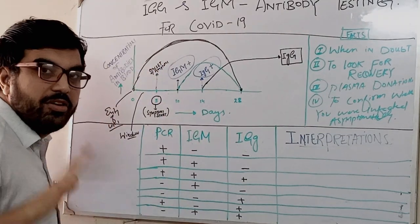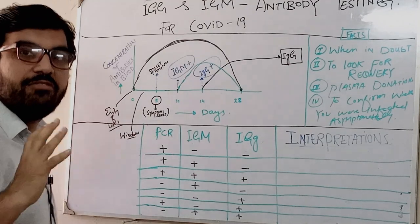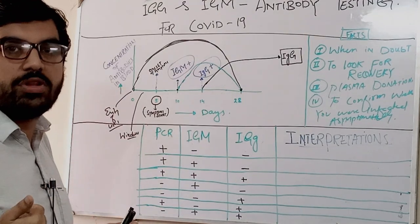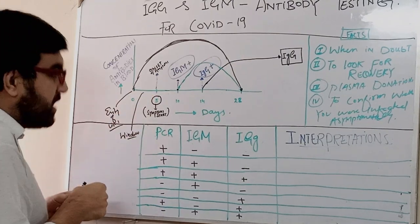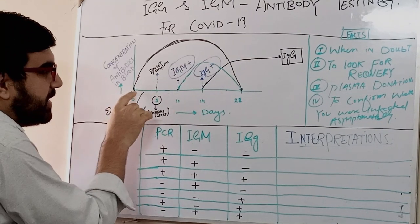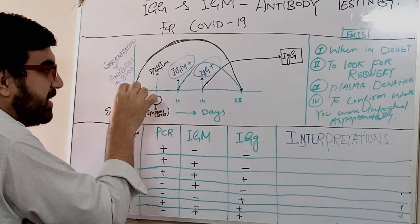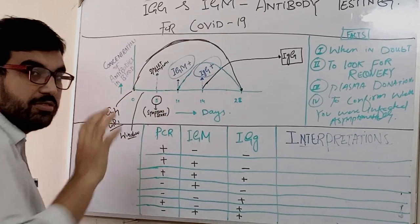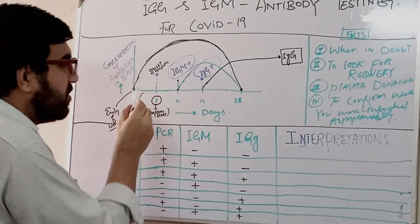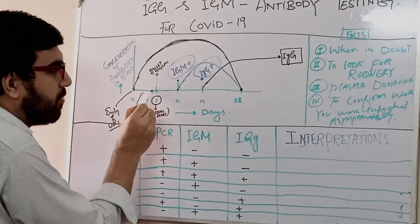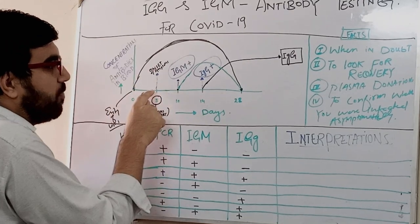The onset of symptoms occurs at the fifth day, but the person is actually infective one day before the onset of symptoms. So infectivity is present during the incubation period — the first five days — but the highest infectivity is one day before onset of symptoms.